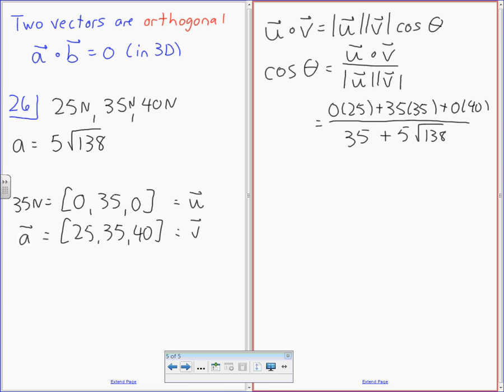What's 35 times 35? Please, somebody help me. 1225. Does that work? 40 times 40 is 1600. What's the angle then? 47.22.